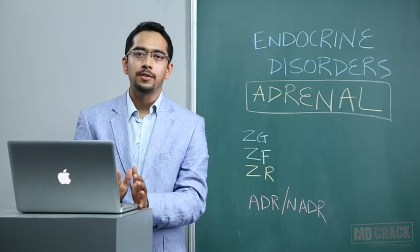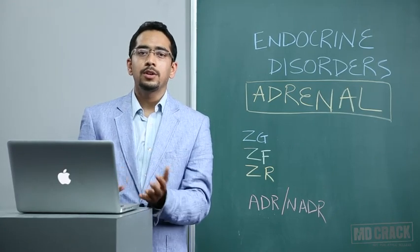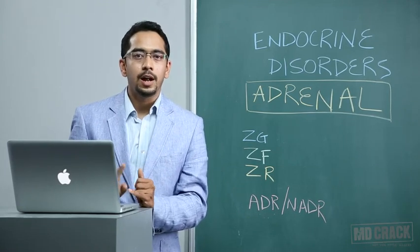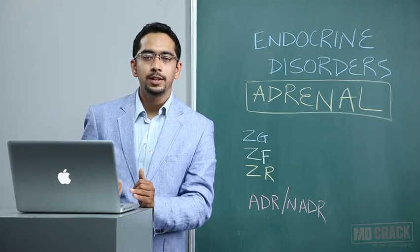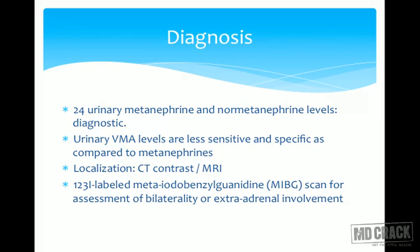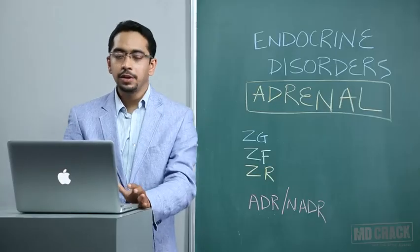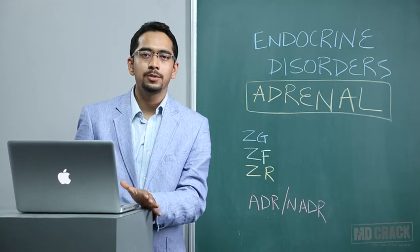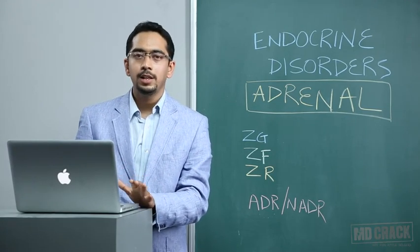Pheochromocytoma is diagnosed based on 24-hour urinary metanephrine and normetanephrine levels — these are metabolites of adrenaline and noradrenaline respectively. Elevated urinary metanephrine and normetanephrine beyond a certain cut-off gives the diagnosis. Urinary VMA levels, previously preferred, are no longer utilized because their sensitivity and specificity are much lower compared to metanephrines. If asked for the best diagnostic test, choose urinary metanephrines over VMA levels.